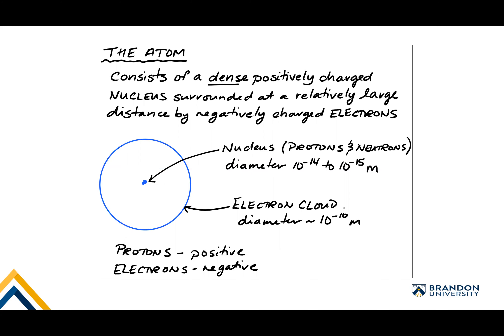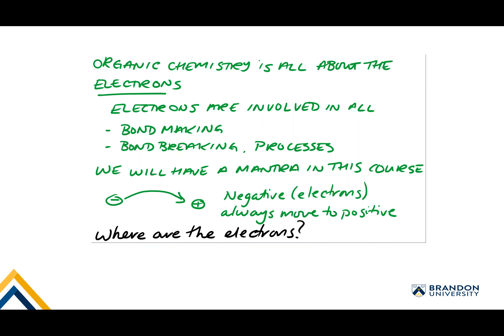When it comes to making bonds, it's all about the electrons. The electrons are involved in all the bond making and all the bond breaking processes. It's the electrons in the outer orbitals — which have essentially no mass — that will always be involved in bond making and breaking. The overall mantra of this course is that the negatively charged electrons will always be seeking out the positive or partial positive charge of a corresponding atom when making bonds. So what we're going to be asking ourselves is: where are the electrons?